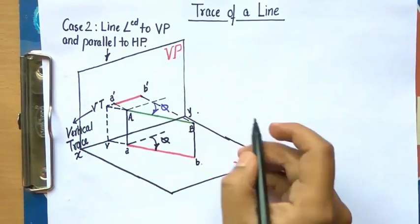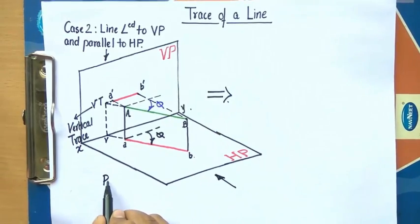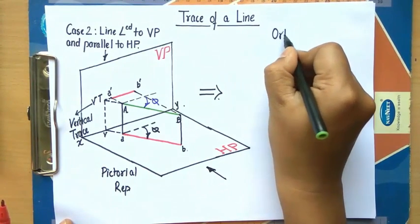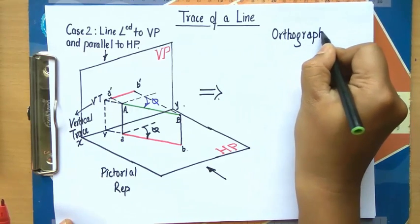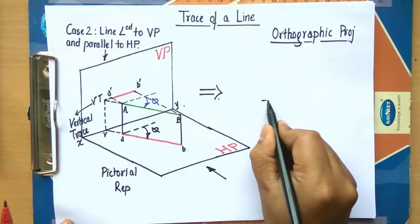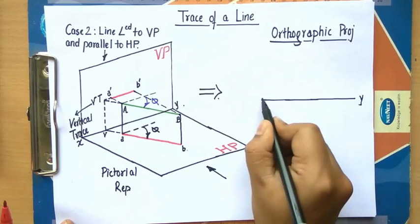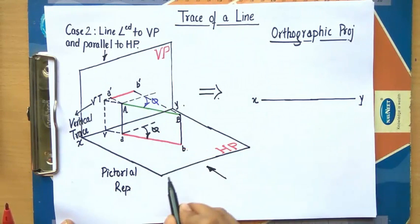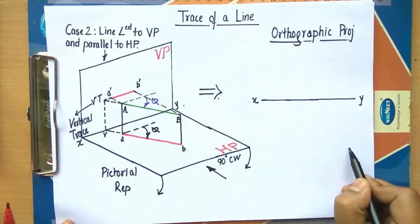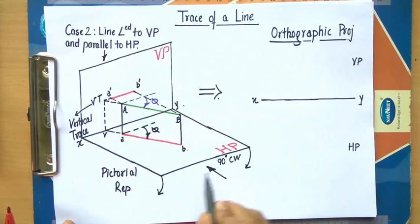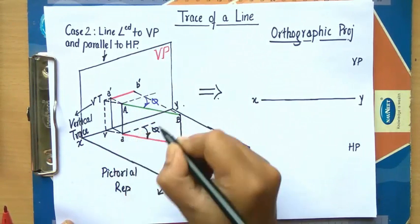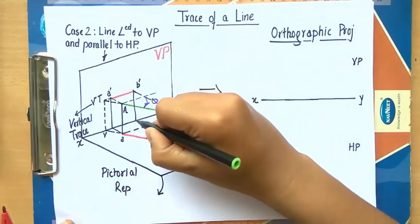Now let's make an orthographic view of this pictorial representation and head over to the orthographic projection. We have the XY line — X and Y. On rotating the horizontal plane, below this XY line we have the HP and above this XY line we have the VP, rotating by an angle of 90 degrees in the clockwise sense. There is a projector line starting from A' down to A, and a projector line from B' ending somewhere here.